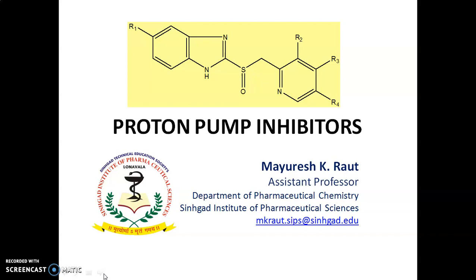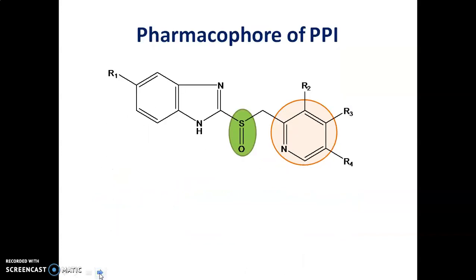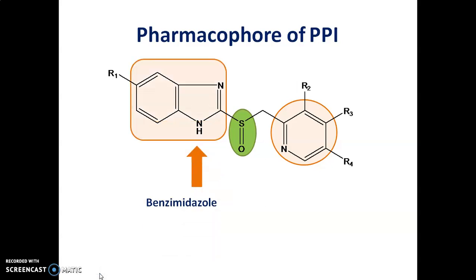Today, we are going to discuss proton pump inhibitors. The general pharmacophore for proton pump inhibitors is shown here. It contains a benzimidazole ring, a pyridine ring, and these two heterocycles are fused together by a sulfoxide linker.